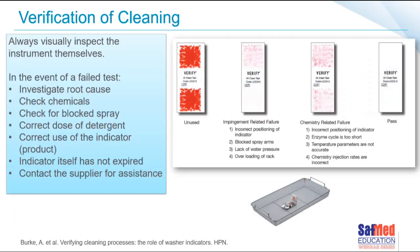It is very important to verify cleaning. Always visually inspect the machines and the instruments themselves. In the event of a failed test, investigate the root cause — look for blocked spray arms, check that the correct dose of detergent is being dosed correctly, and you may need your service provider to assist. Also check that the indicator itself was used, stored and not expired correctly. If a cleaning indicator shows only one side has come clean, it may be an impingement-related issue; if the entire indicator has changed colour but not correctly, it may be a chemistry-related issue.